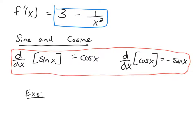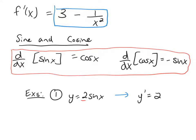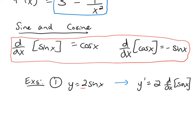Let's look at the function y equals 2 sine x. What would the derivative be? The coefficient 2 just stays — you don't do anything to it. Then take the derivative of sine, which is cosine. So the derivative here would be 2 cosine x.